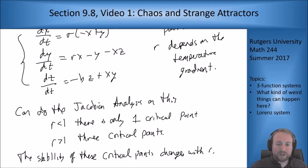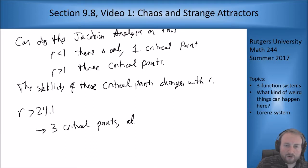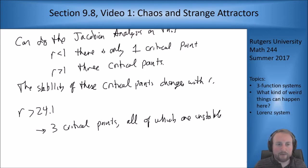Now as r gets really big, we come to a really interesting situation. For r bigger than like 24.1, we have three critical points, all of which are unstable. So if you have three points they could go to but all of them are unstable, you're thinking they have to run away and go to infinity because there's nowhere for them to converge to.